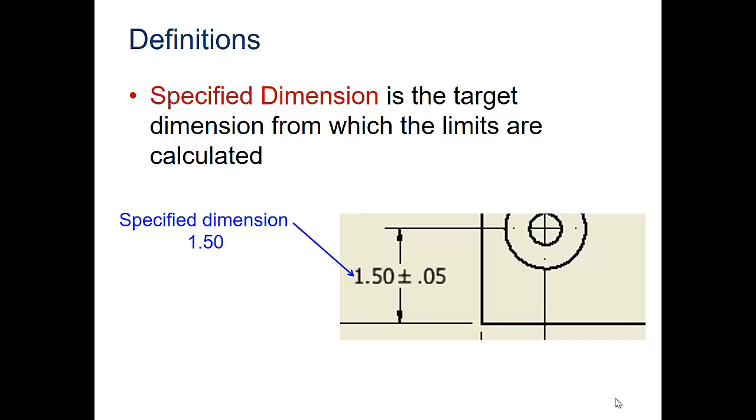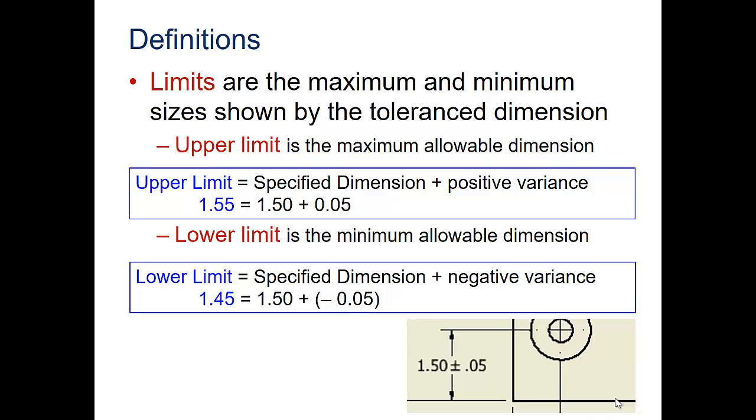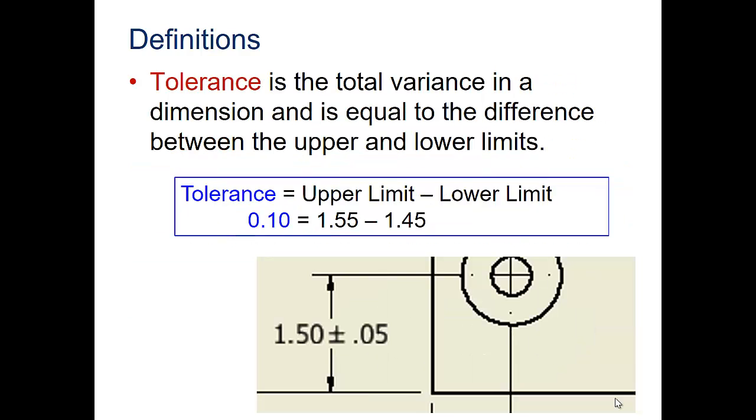Specified dimension is the target dimension from which the limits are calculated. The upper limit is the maximum allowable dimension, so the upper limit here would be 1.5 plus .05, which gives us 1.55. The lower limit is the minimum allowed dimension, 1.5 minus .05, which gives you 1.45. The tolerance is the total variance in the dimension, equal to the difference between the upper and lower limits. If you subtract the upper limit from the lower limit, you would get .10 for this tolerance.